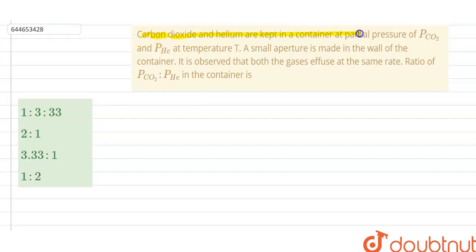Carbon dioxide and helium are kept in a container at partial pressure of PCO2 and PHe at temperature. A small aperture, that is a small hole, is made in the wall of the container. It is observed that both gases effuse at the same rate.